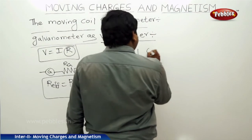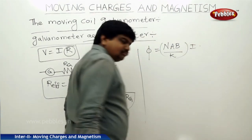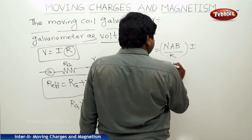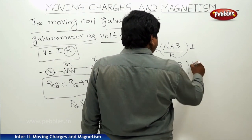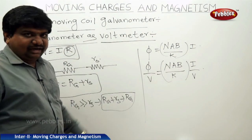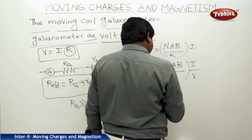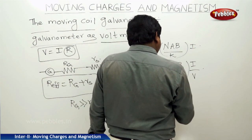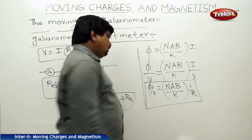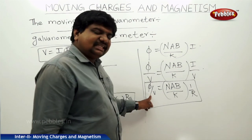We also got the equation phi equals N·A·B divided by K times I. Multiplying and dividing by V on both sides, phi divided by V equals N·A·B divided by K times 1/R, which is deflection per unit voltage — another method to find sensitivity. If you want greater sensitivity, resistance should be less. If resistance is more, less sensitivity will appear in terms of voltage.